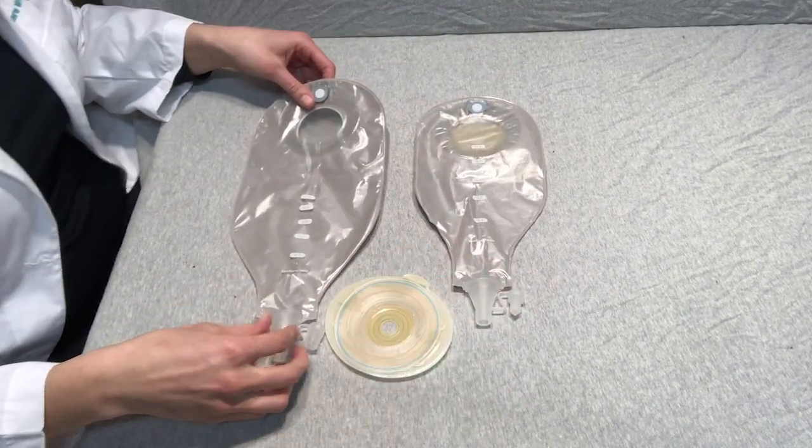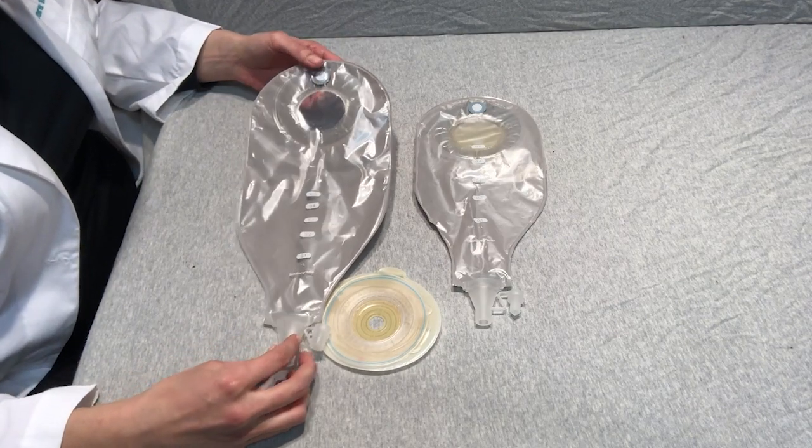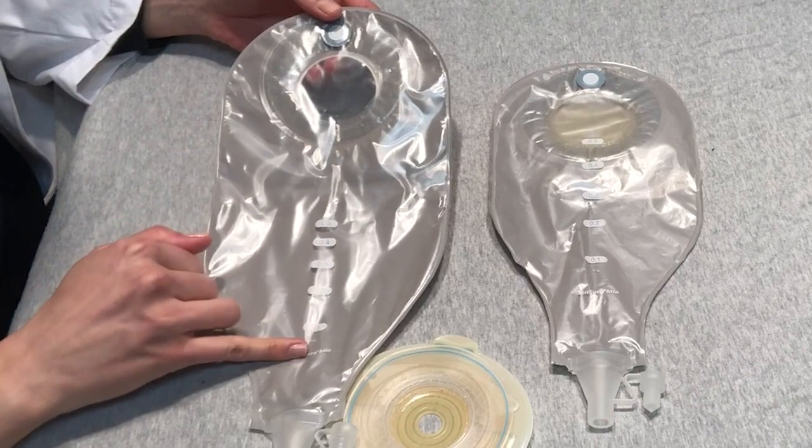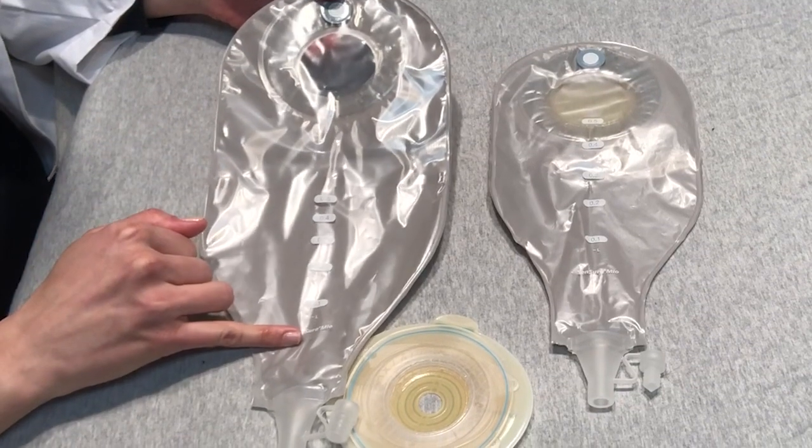This particular pouch is our two-piece high output flex. Same features on this pouch. We have the filter here, visual cue as well to help with measuring.